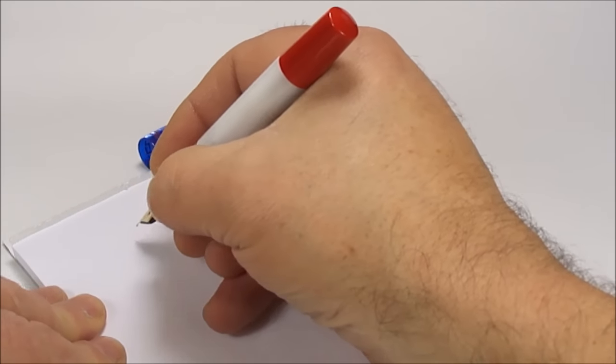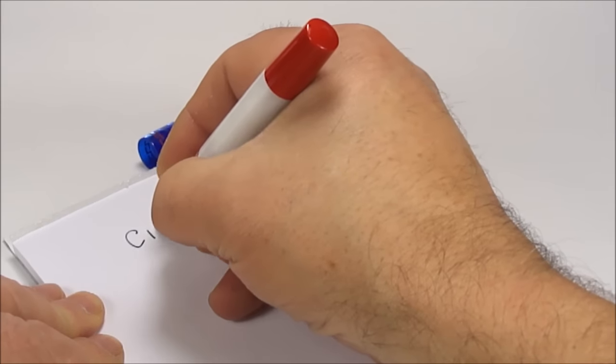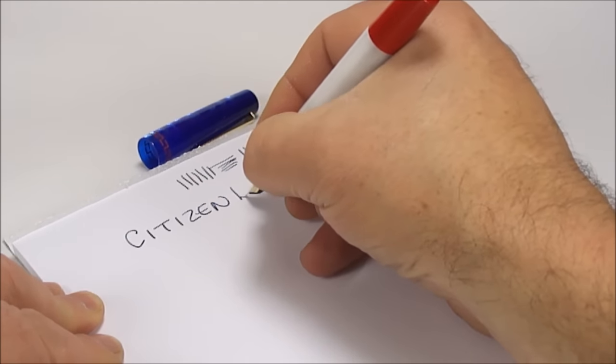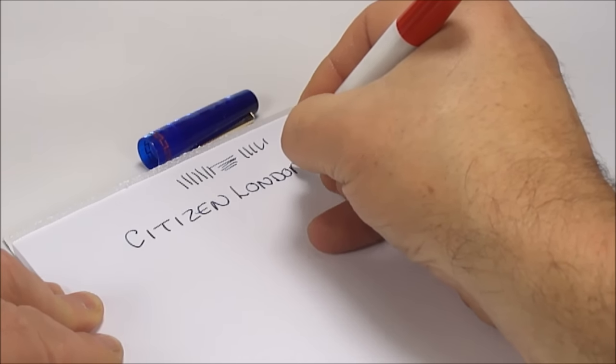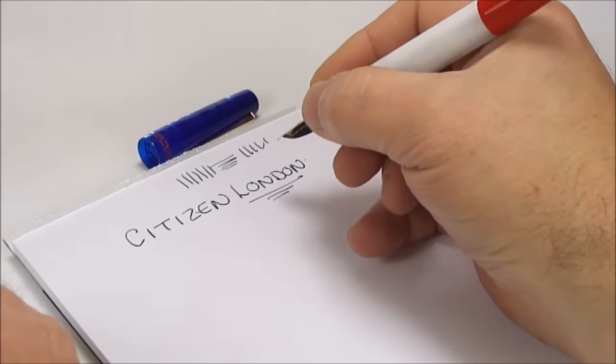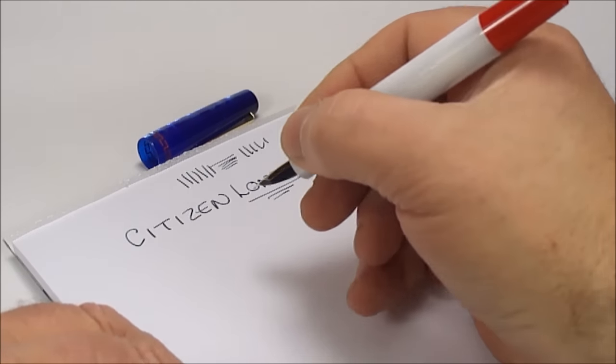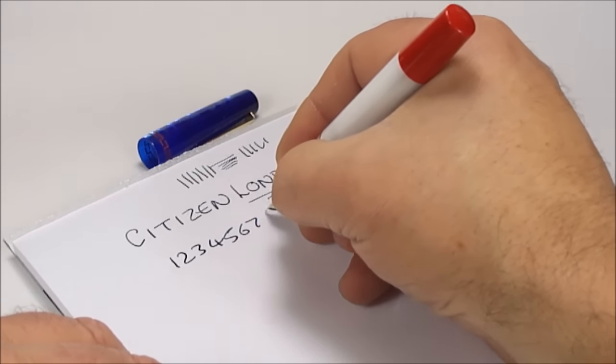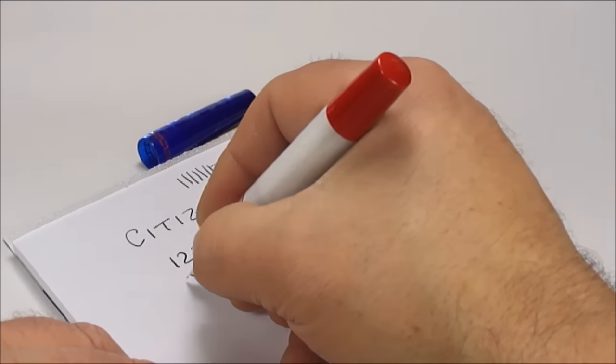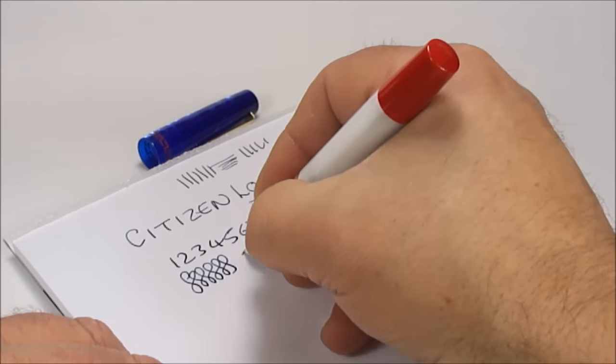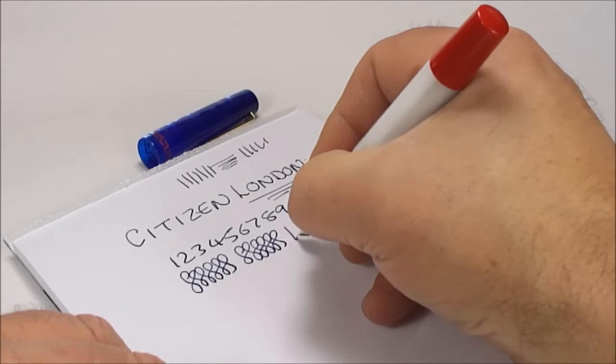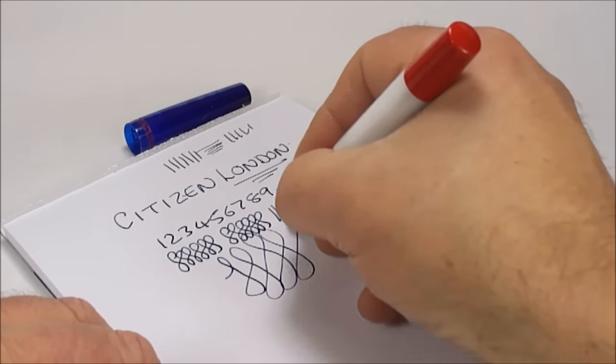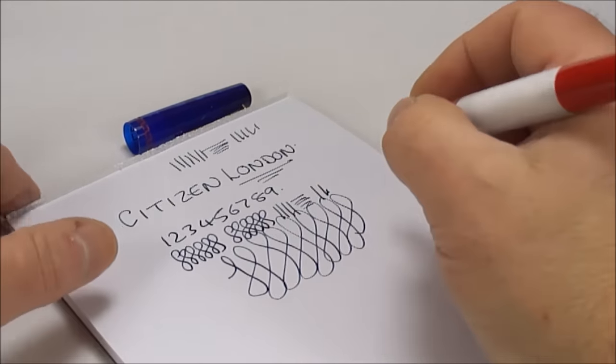So what we have for you is this Citizen pen, and this one as we've said before is the London edition, although as we mentioned you've got lots of other cities you can actually buy depending where you're from. Again, it's writing with a medium nib or a medium line and it's writing nicely. It's writing with a lovely smooth, smooth line. So let's, there you go, there doesn't appear to be any skipping or anything.